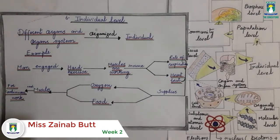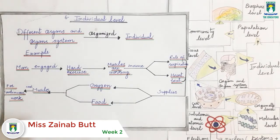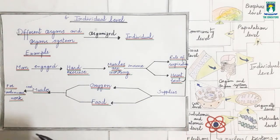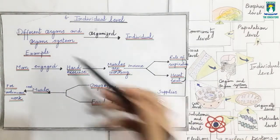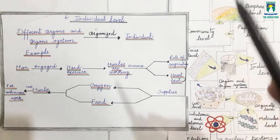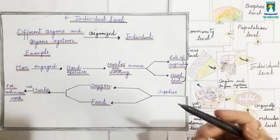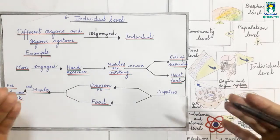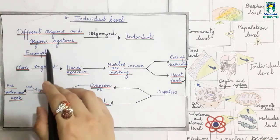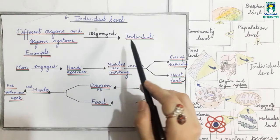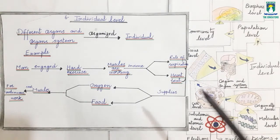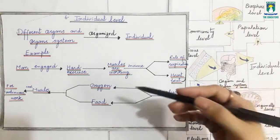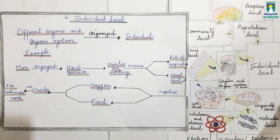As you know, we are discussing the level of organization. Now we will discuss our next level of organization, which is the individual level. As we have discussed earlier about different organs and organ systems, now we will discuss how these organs and organ systems are assembled together to form an individual or an organism.